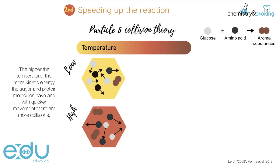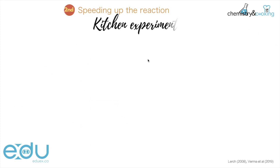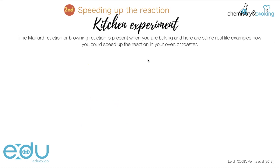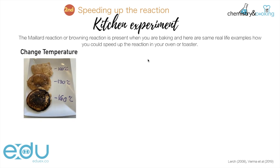So how would that look in a kitchen? Let's check it out. With the Maillard reaction it's the browning reaction that we see in baking all the time. Let's look at some real-life examples of how we can speed up the reaction. First off we have change in temperature. We are going to look at pancakes that are baked at a constant mass of sugar and egg, and we fry them at different temperatures. Let's do it.